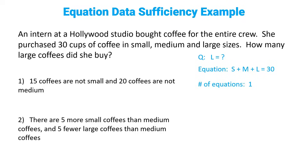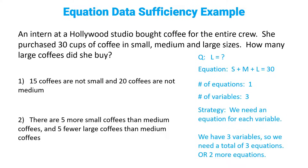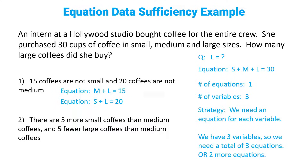We're given one equation but we have three variables. We need an equation for each variable, so we need a total of three equations. They already gave us one in the question stem, so we're looking for two more. Statement one says 15 coffees are not small and 20 coffees are not medium. In math: 15 coffees are not small means m plus l equals 15, and 20 coffees are not medium means s plus l equals 20. We were looking for two more equations and we got them — that is sufficient.